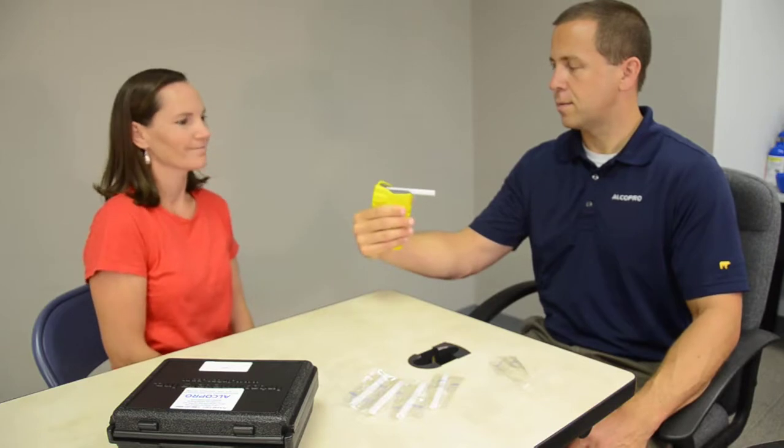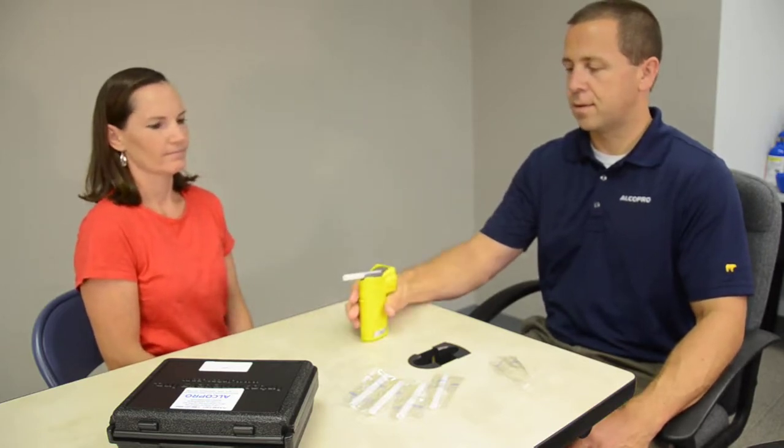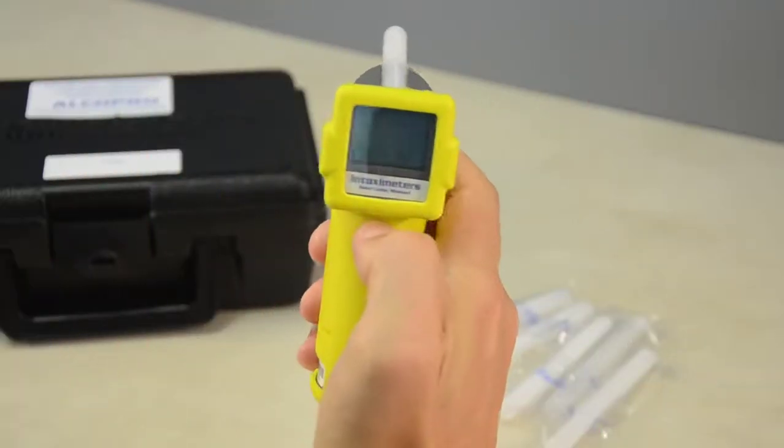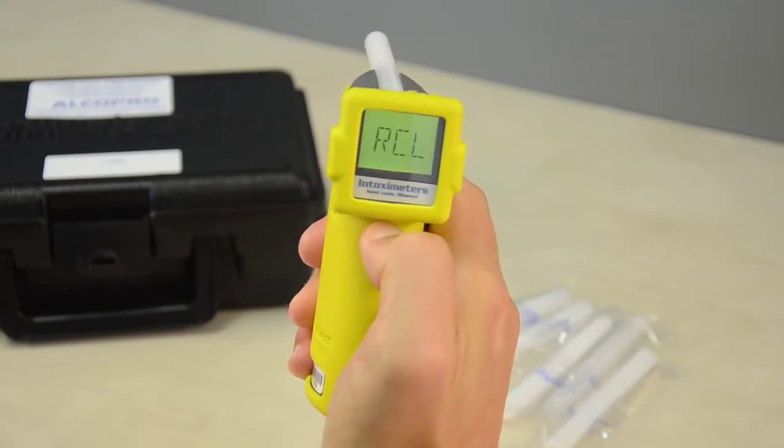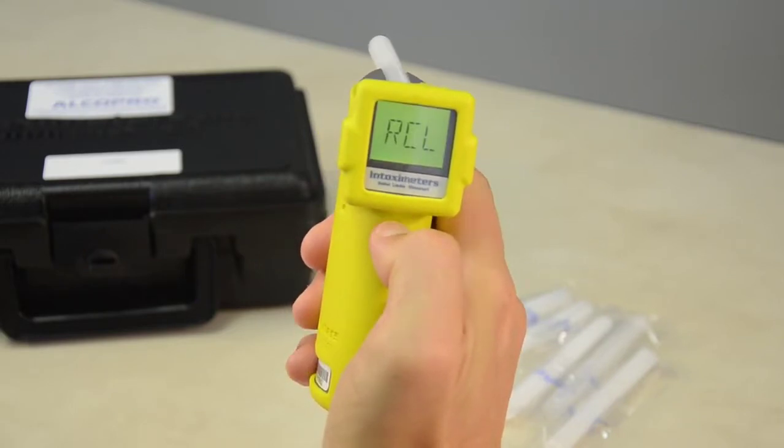To view the last test result after the instrument is powered off, use your thumb to press the OFF button, and then simultaneously press the ON button. The display will show RCL, which stands for Recall Last Test. Press the OFF button to display the last test result.